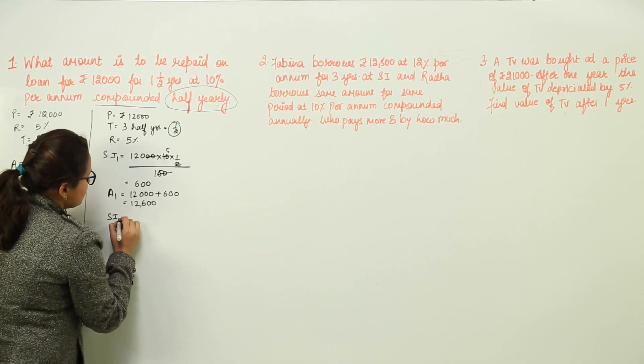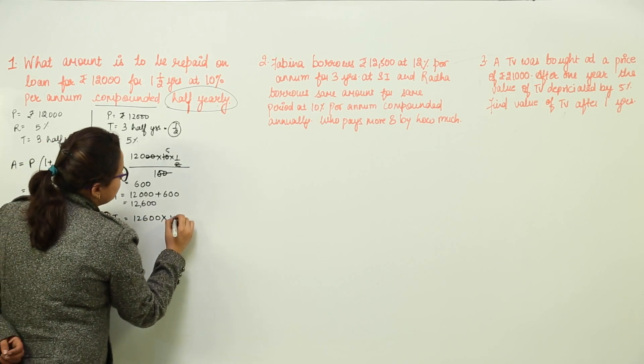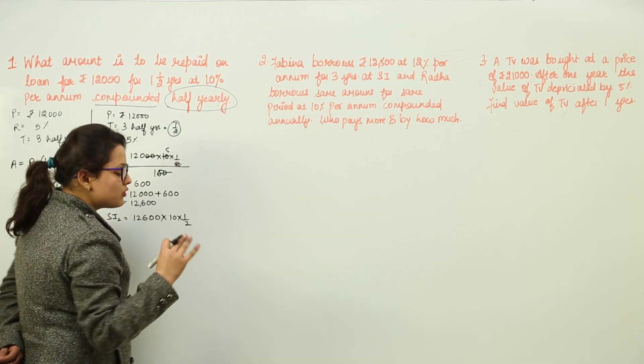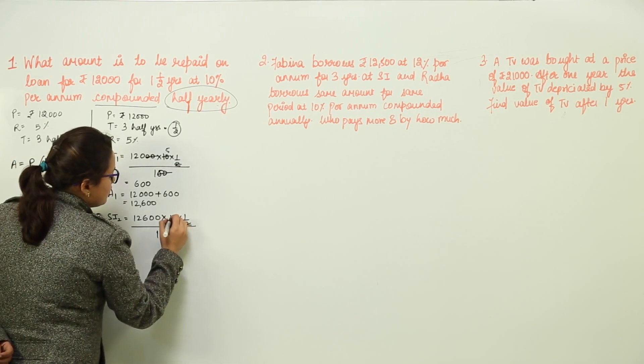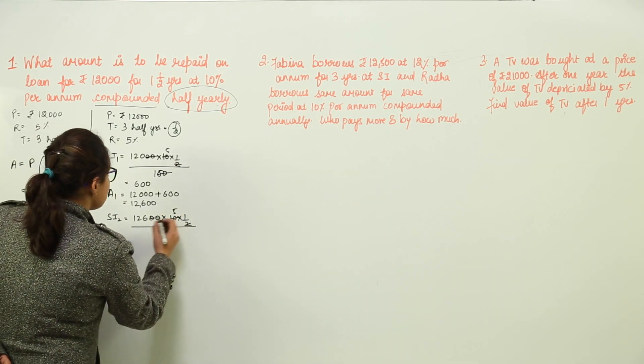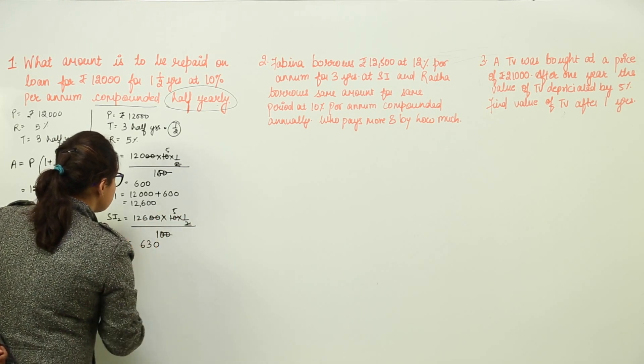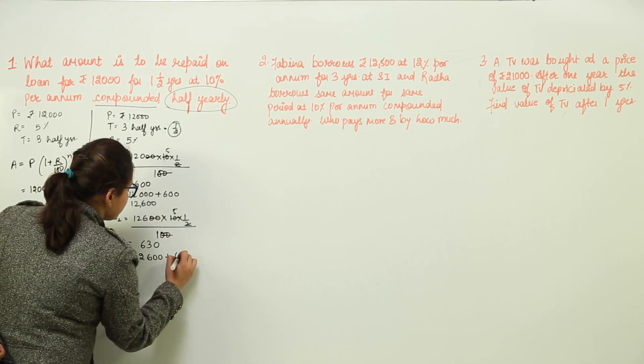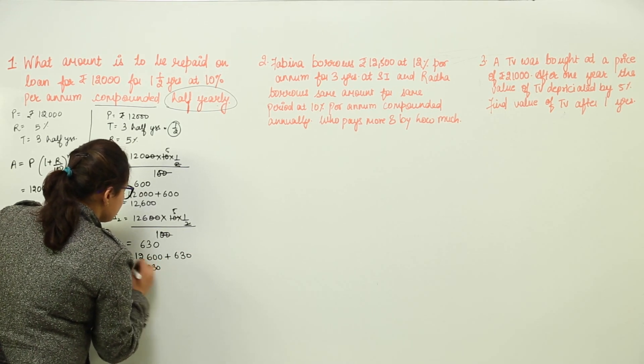This is the amount for first year. This is going to become my principle for the second year. So, let us solve 12,600 into 10 into again 1 by 2. We have to calculate simple interest for each case. 2 and 5 zeros get cancelled. We get the answer as 630. The amount would be 12,600 plus 630. Adding it up, we get 13,230.